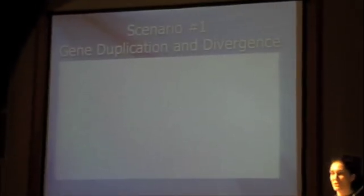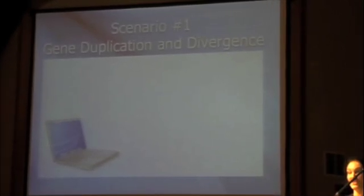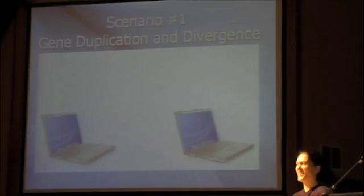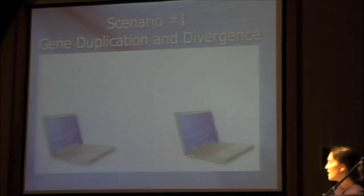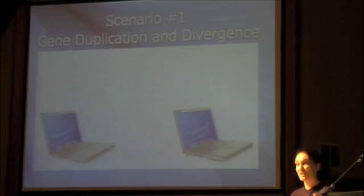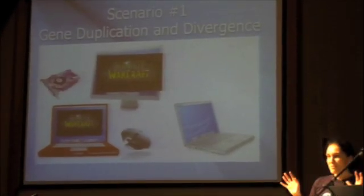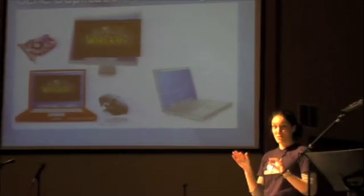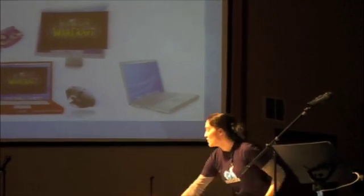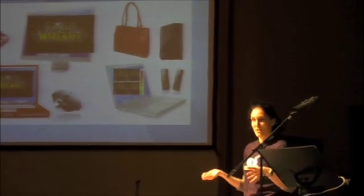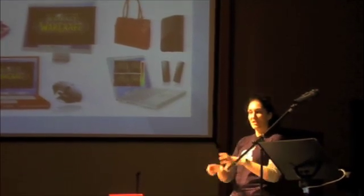Gene duplication and divergence is one way that we get new information into our DNA. For an analogy, let's say you just graduated from high school, and from a graduation party you won a free computer. Then grandma bought you another one — you can't take it back. So you decide one machine will evolve into your gaming machine: sweet computer, Warcraft, new monitor, new graphics card, gaming mouse. Your other computer is for school and research only — it's your professional computer, with an external hard drive, a nice professional case, and presentation materials.